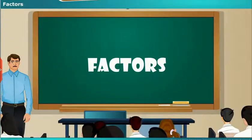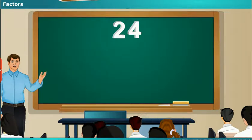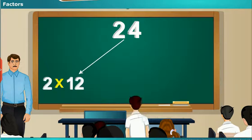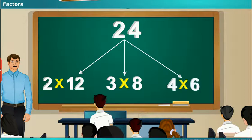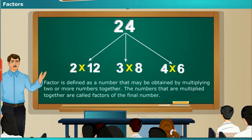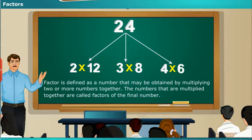Here we discuss the factors. Children, tell me the number 24 as the product of two numbers. Students respond: it is 2 × 12; no sir, it is 3 × 8; no sir, it is 4 × 6. All the answers given by you are correct, and these are what are called factors. A factor is defined as a number that may be obtained by multiplying two or more numbers together. The numbers that are multiplied together are called factors of the final number.